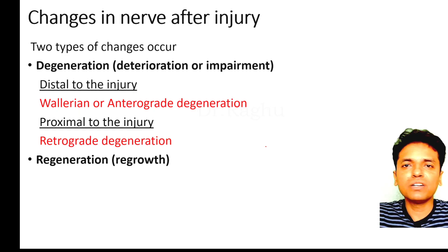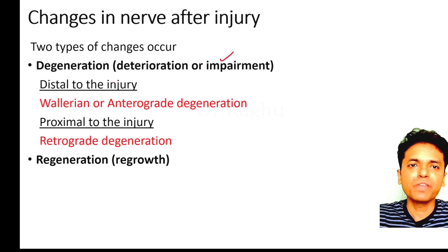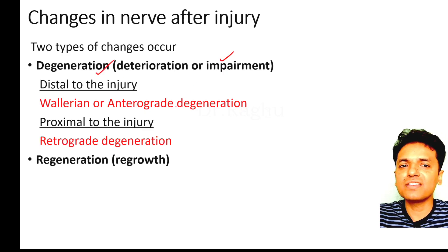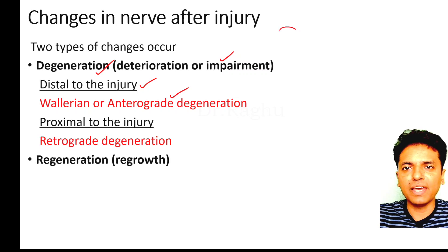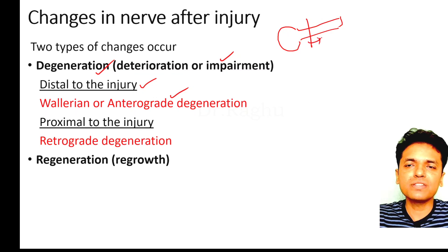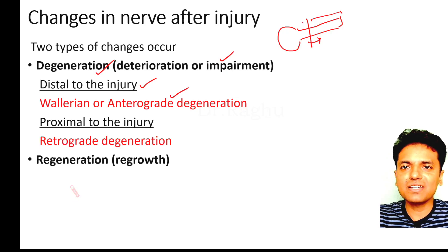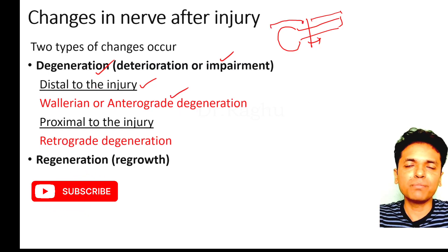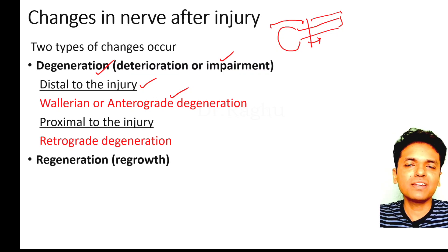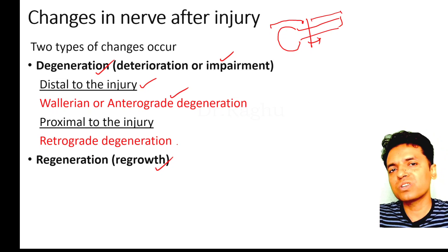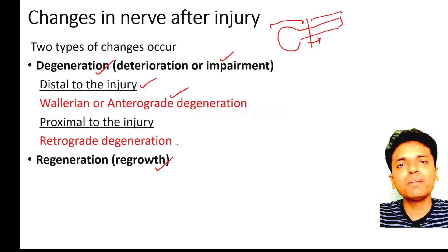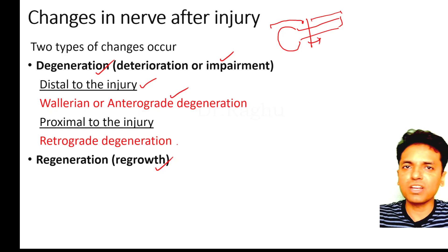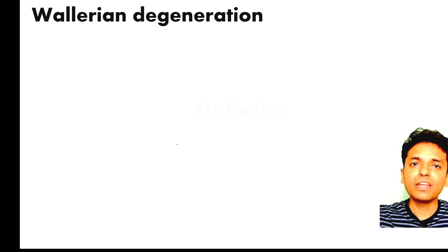After nerve injury, there are two types of changes: degeneration and regeneration. Degeneration occurring distal to the injury is called Wallerian degeneration or anterograde degeneration. For example, if there is a cell body with an axon and injury occurs at a point, the degeneration in the distal part of the axon is Wallerian degeneration. Degeneration in the proximal remaining portion is called retrograde degeneration. Wallerian degeneration starts within 24 hours after the injury.